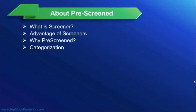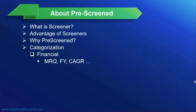Why pre-screened? We have mentioned that. The categorization of pre-screened in TopStop Research: the first category is financial screeners, which are based on most recent quarters, financial year, trailing 12 months, annual growth, continuous growth, and quite a few other things we'll cover shortly. The next is technical screeners — in this one we go with technical indicators and patterns. For example, it could be an ultimate oscillator, or it could be a pattern like head and shoulders. We'll be covering that in a short while.